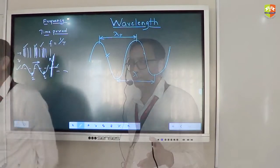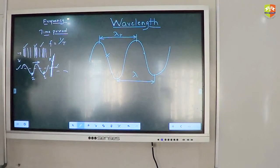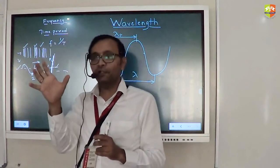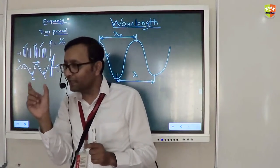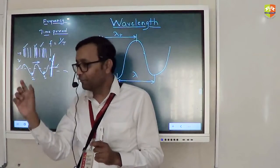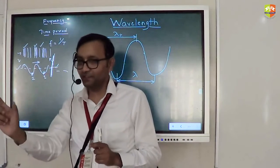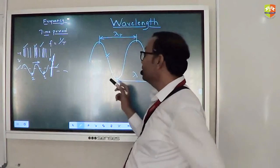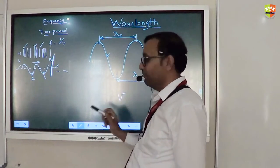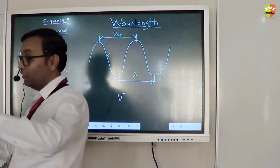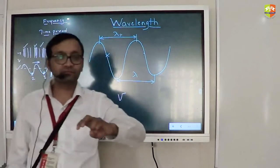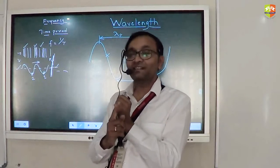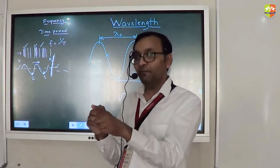Now listen here. Time period is how much? Time period is time taken for two consecutive crests to pass. Wavelength is distance between two consecutive crests. So if velocity is V, can you tell me the relation between time period, wavelength and velocity? What do you think? Time period is what? Time period is time taken to travel one wavelength.